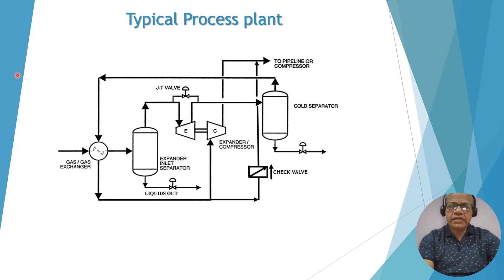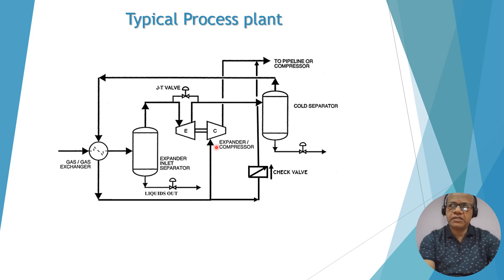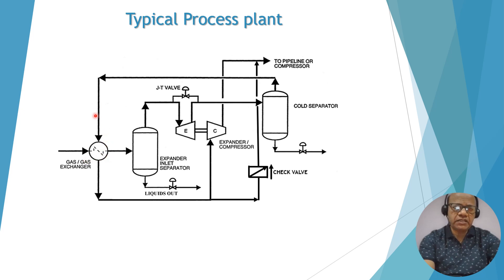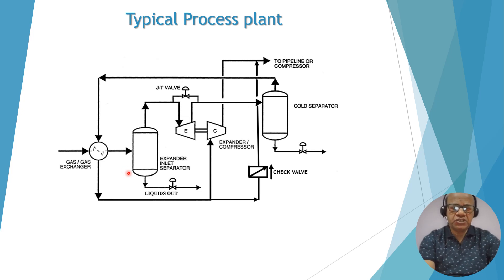This is again a typical plant process. Let me explain the flow path of the gas. This is a turbo expander — E stands for expander and C stands for compressor of the turbo expander-compressor machine. This is a JT valve which acts in parallel with the turbo expander. First, gas comes into the gas-to-gas exchanger where gas is cooled by another gas stream.